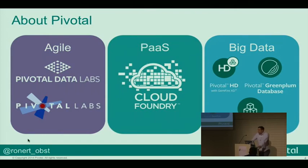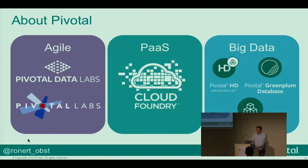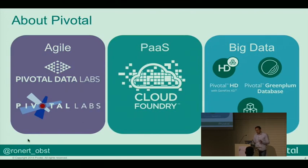Quickly about Pivotal: we were founded in 2013 out of parts of VMware, EMC, and Greenplum. We have three core components which are agile development, platform as a service, and big data. I work for Pivotal Data Labs as a data scientist doing agile data science engagements. We also have Pivotal Labs for agile application development, and at the core of our company is Cloud Foundry, a leading open source platform as a service — we aspire to be the Linux of the cloud — and that is showing some real encouraging growth.